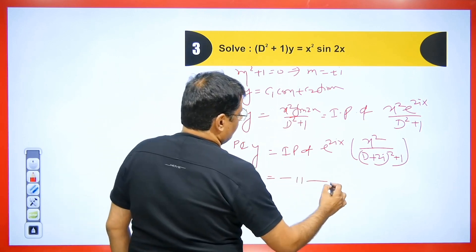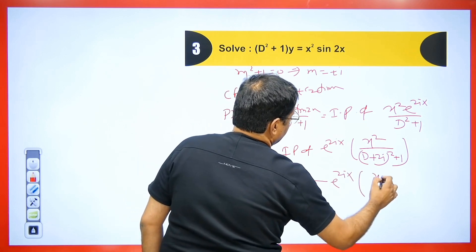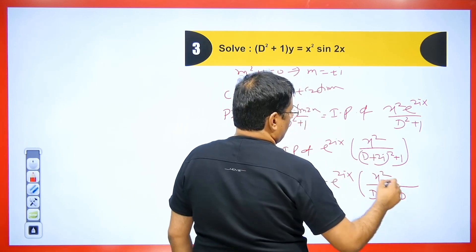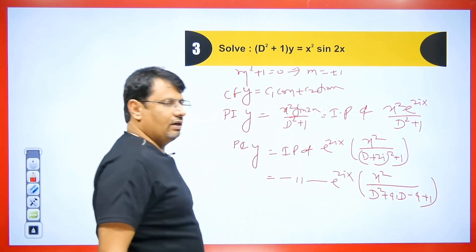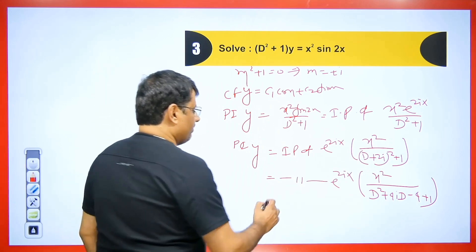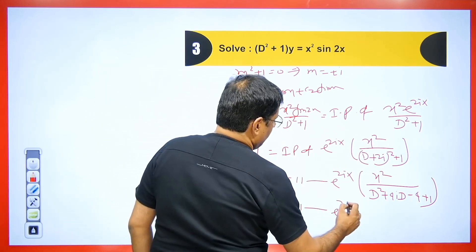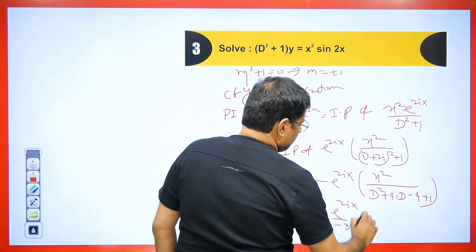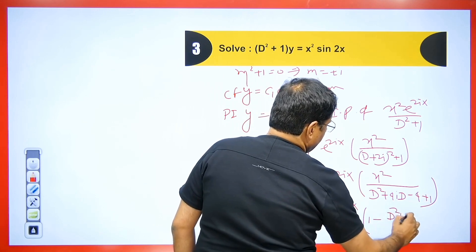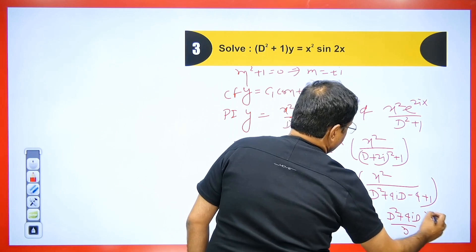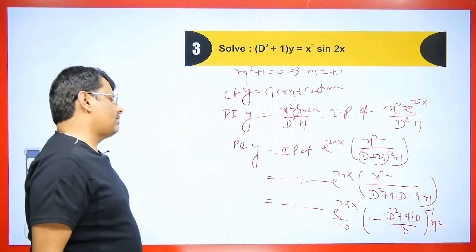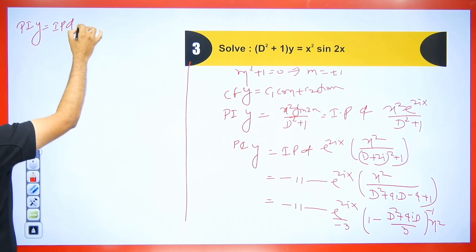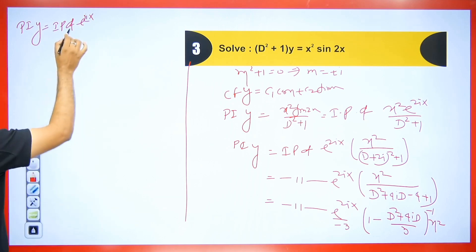Simplifying, we write the imaginary part of e^(2ix) with denominator −3 + D² + 4i·D. Taking −3 common: PI = Imaginary Part of [e^(2ix) / (−3)] · [1 − (D² + 4i·D)/3]⁻¹ · x². We do binomial expansion: [1 + (D² + 4i·D)/3 + ((D² + 4i·D)/3)² + ...] · x². Since we can differentiate x² at most twice, only terms up to D² are useful.